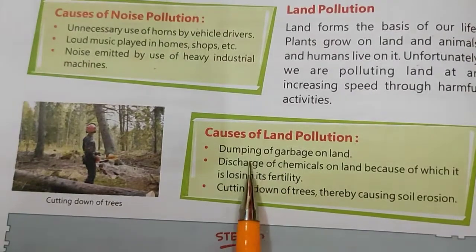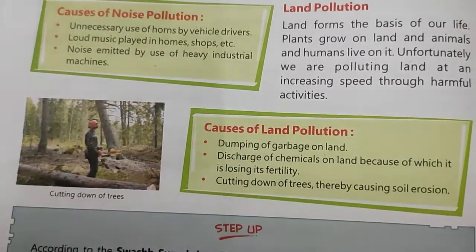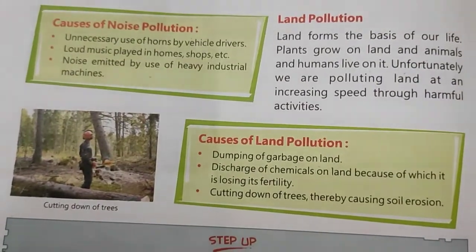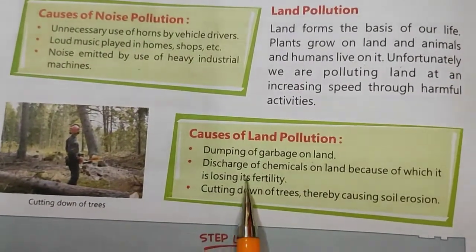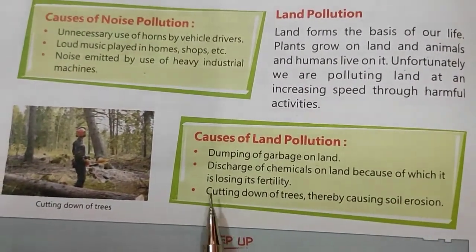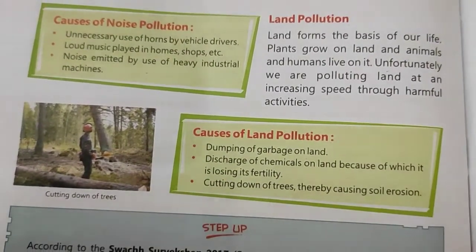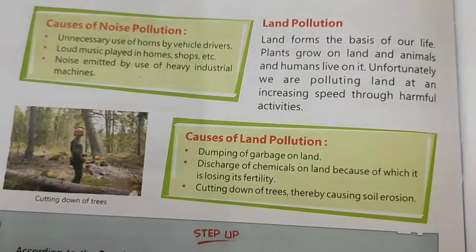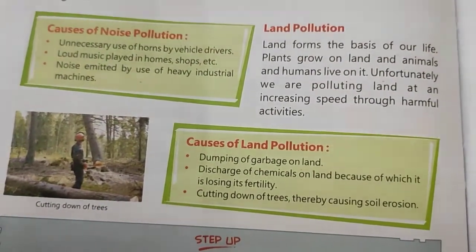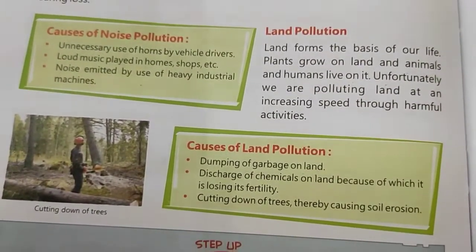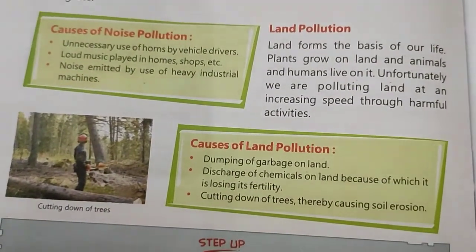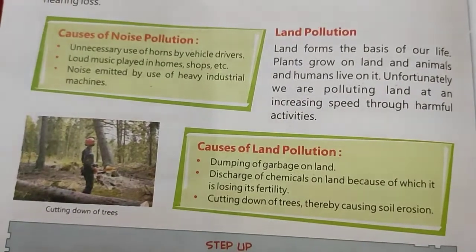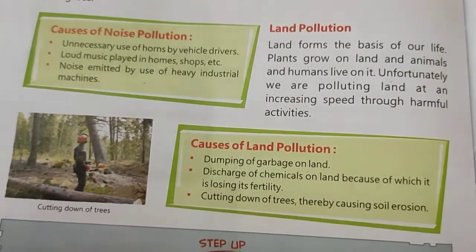Causes of land pollution: Number 1 is dumping of garbage on land. People throw garbage here and there, causing land pollution. Number 2 is discharge of chemicals on land because of which it is losing its fertility. Chemicals and garbage thrown from factories affect the soil, making it unfit for agricultural purposes. We should stop all these activities.